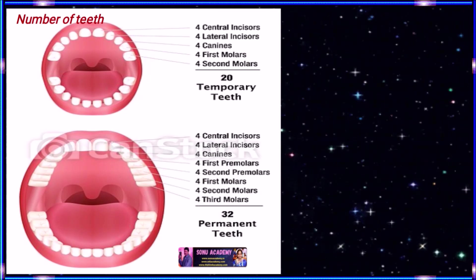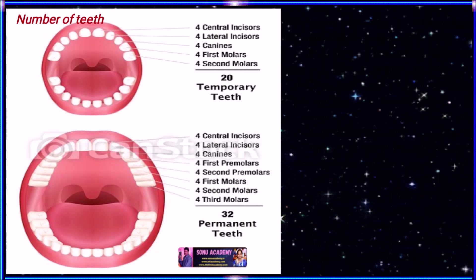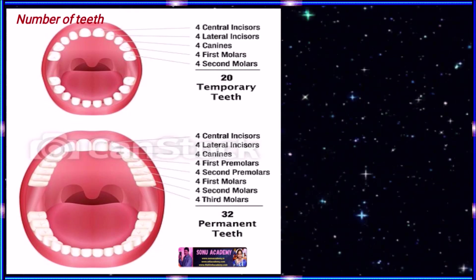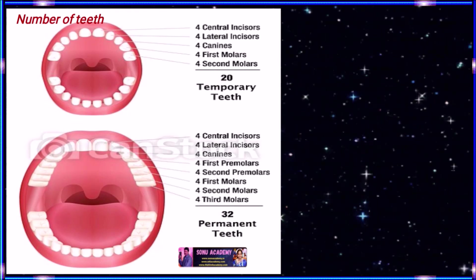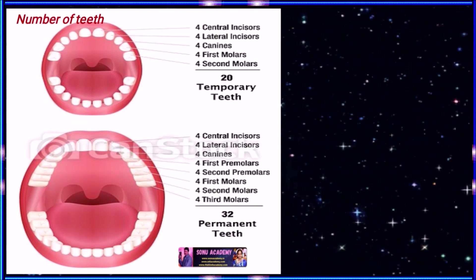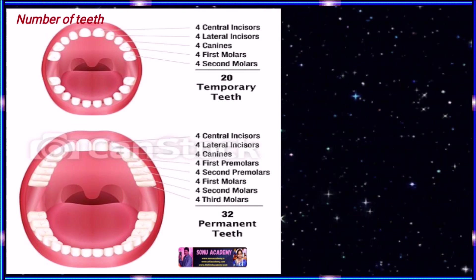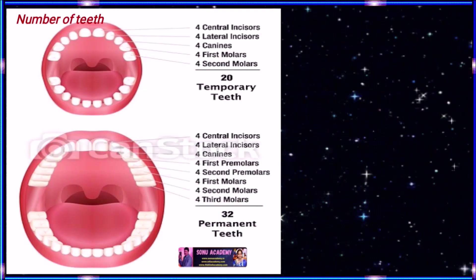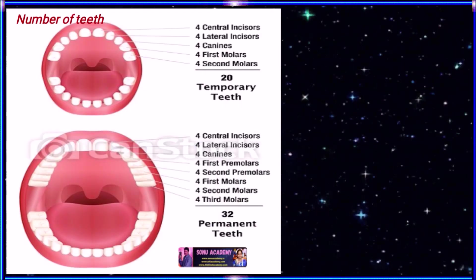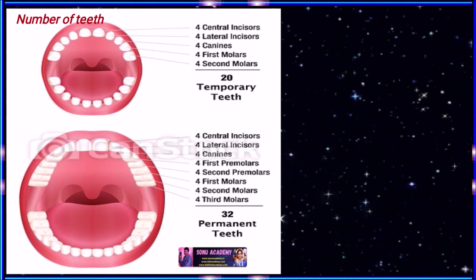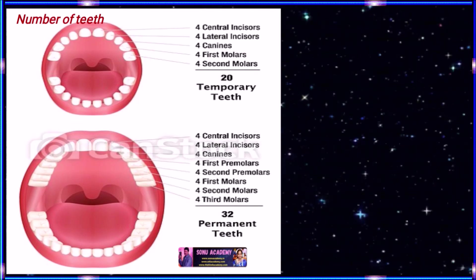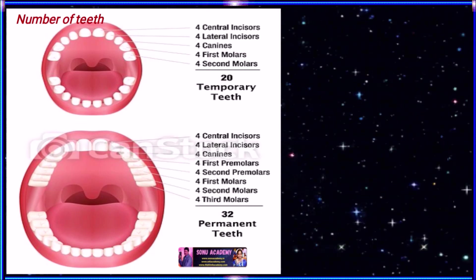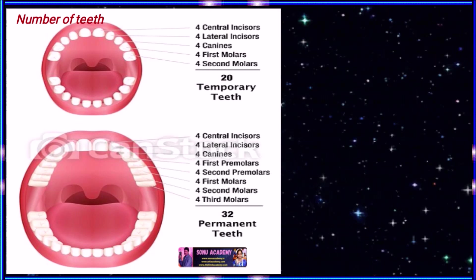Now let us discuss the number of teeth present in humans. The milk or deciduous teeth are 20 in number — 10 in the upper and 10 in the lower jaw. The deciduous teeth begin to erupt when the child is about 6 months old and should all be present by the end of 24 months. The permanent teeth begin to replace the milk teeth in the 6th year of age. These teeth are 32 in number and are usually completed by the 20th year.